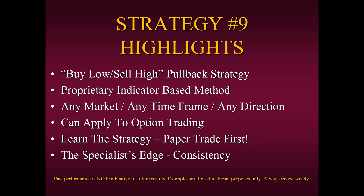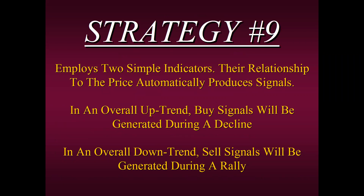Our edge here is consistency. A lot of you think consistency means this never loses and we're always going to make money — no, that's not true. What consistency means is that you will have losses from time to time, but a consistent method is one that's able to recoup those losses. That's what consistency is — two steps forward, one step back. We can't go into the full rules — it wouldn't be fair to our members who have strategy number nine. But remember, it employs two simple indicators, and their relationship to one another and to the price automatically produces the signals. In an overall uptrend, buy signals will be generated during the decline; in an overall downtrend, sell signals will be generated during a rally.